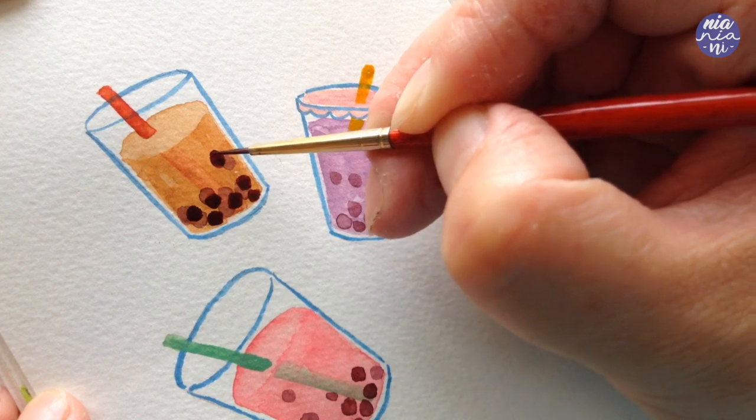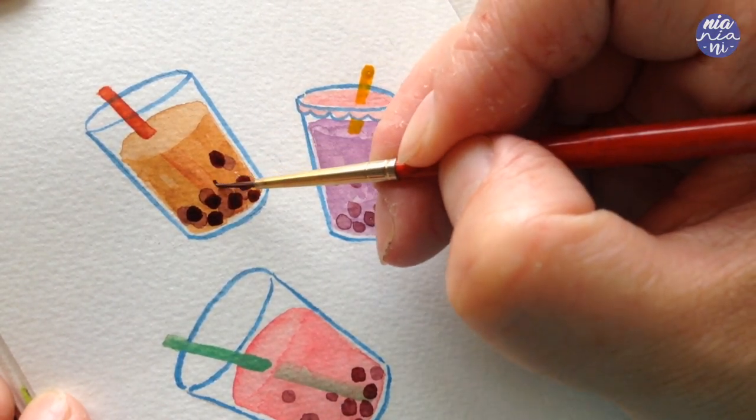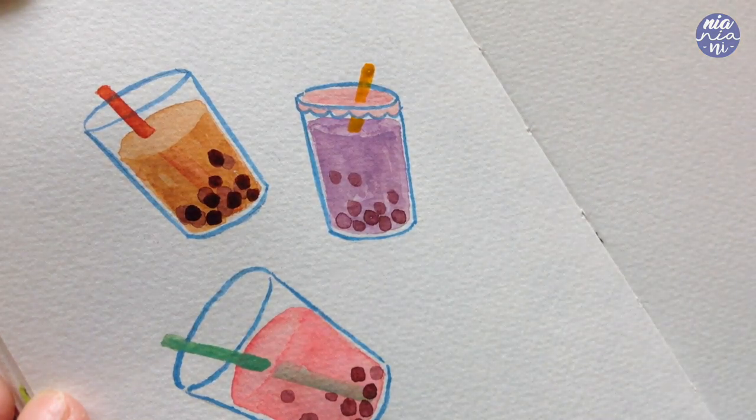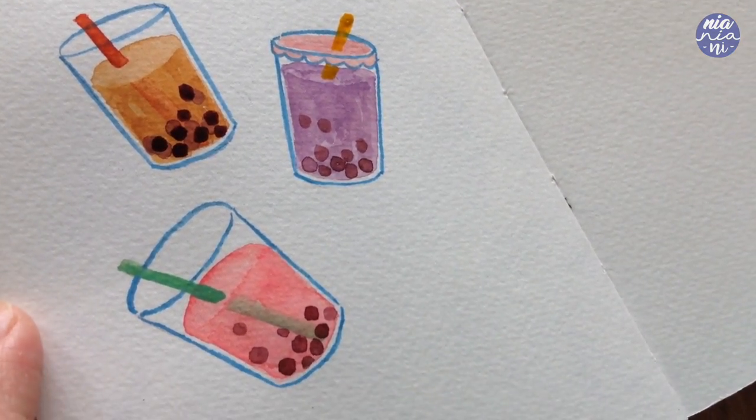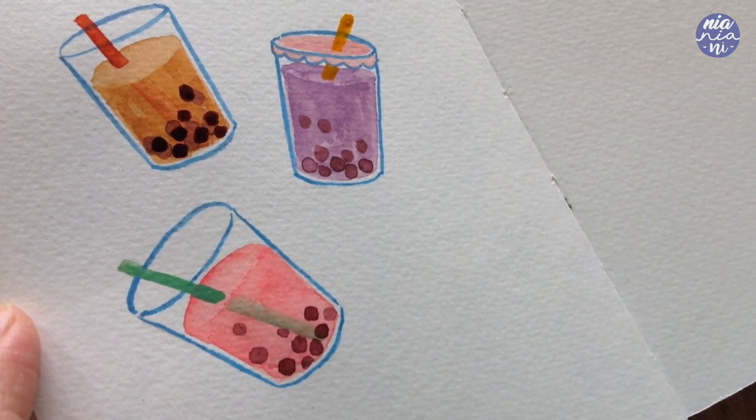And as you can see, I can fill in some of the empty spaces here so it doesn't look as empty as just the first layer before. I also like to paint some bobas floating up just to give it a little bit of movement.